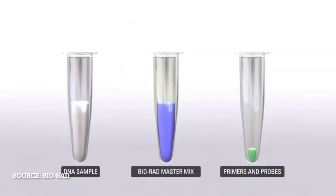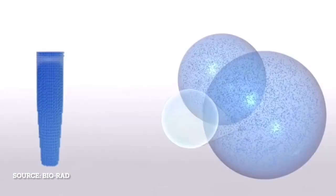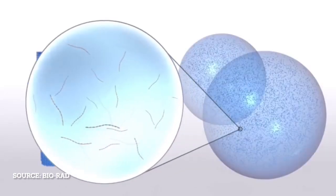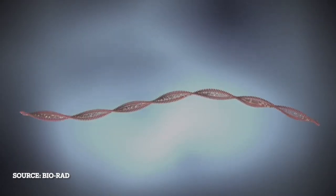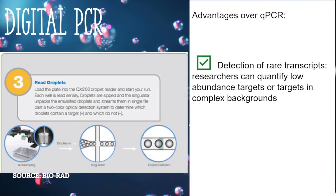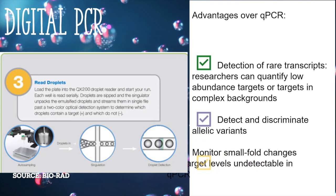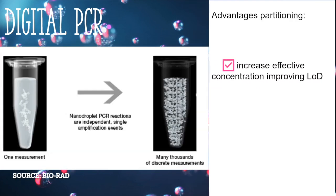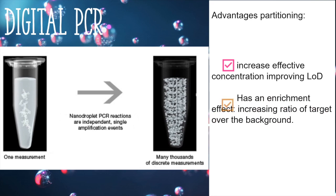The advantage is that you can have detection of rare transcripts. Researchers can quantify low abundance targets or targets in complex backgrounds, detect and discriminate allelic variants, and monitor small fold changes in target levels that are undetectable in qPCR. The specific advantages of partitioning is that you effectively increase the concentration, your limit of detection in each little partition. You have this enrichment effect that increases your ratio of target over the background, giving you this opportunity in needle in a haystack situations to detect that rare event.